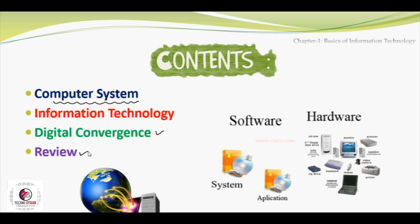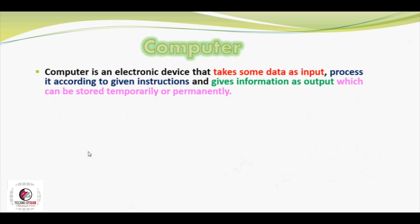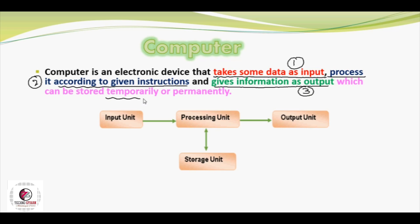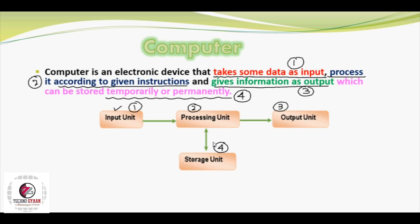Now we start with the definition of computer. Computer is an electronic device that takes some data as input, processes it according to given instructions, and gives information as output, which can be stored temporarily and permanently for future use. On the screen you can see a diagram showing the four basic units of a computer: the first is input unit, second is processing unit, third is output unit, and fourth is storage unit. If we explain the functionality of these four units, the definition of computer is automatically complete.